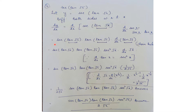Your answer becomes sec(tan(√x)) · tan(tan(√x)), multiplied by d/dx(tan(√x)) by the chain rule. So many students get confused here — wherever you have written x in the formula, substitute it by tan(√x). So you get sec(tan(√x)) · tan(tan(√x)) · d/dx[tan(√x)].